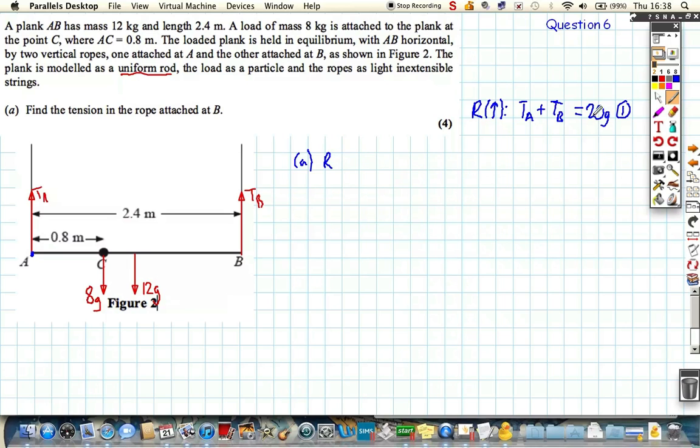I'm going to take moments and resolve around A. That gets rid of that tension. It's a really common trick to use. The total clockwise moment must equal the total anticlockwise moment. We've got 8g acting at a perpendicular distance of 0.8 metres away. We've got 12g acting at a distance of 1.2 metres away, the exact centre of the rod. And then we've got the tension at B acting at a distance of 2.4 away. So we get 6.4g plus 14.4g equals 2.4 tension at B.